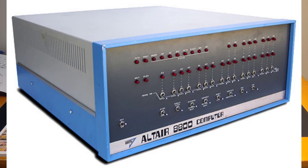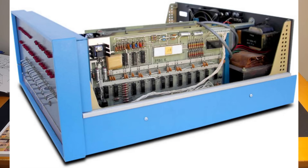In 1974, a small company called MITS introduced the Intel 8080-based Altair 8800 computer kit. Despite being limited in features — the user interface was a front panel with binary LEDs and toggle switches, and only 256 bytes of memory were included in the base unit — and relatively expensive at $439 in 1974, equivalent to almost $2,000 today, it was a runaway success with thousands of orders in the first month.